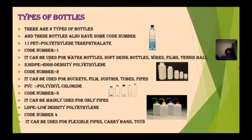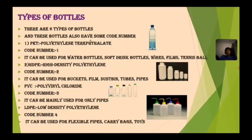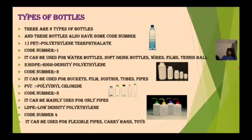Now, types of bottles — there are six types and each has a code number. First is PET — polyethylene terephthalate, code number 1 — used for water bottles, soft drink bottles, wire fillings, and tennis balls. Second is HDPE — high density polyethylene, code number 2 — used for buckets, fillings, dustbins, pipes, and so on. Third is PVC — polyvinyl chloride, code number 3 — mainly used for pipes.